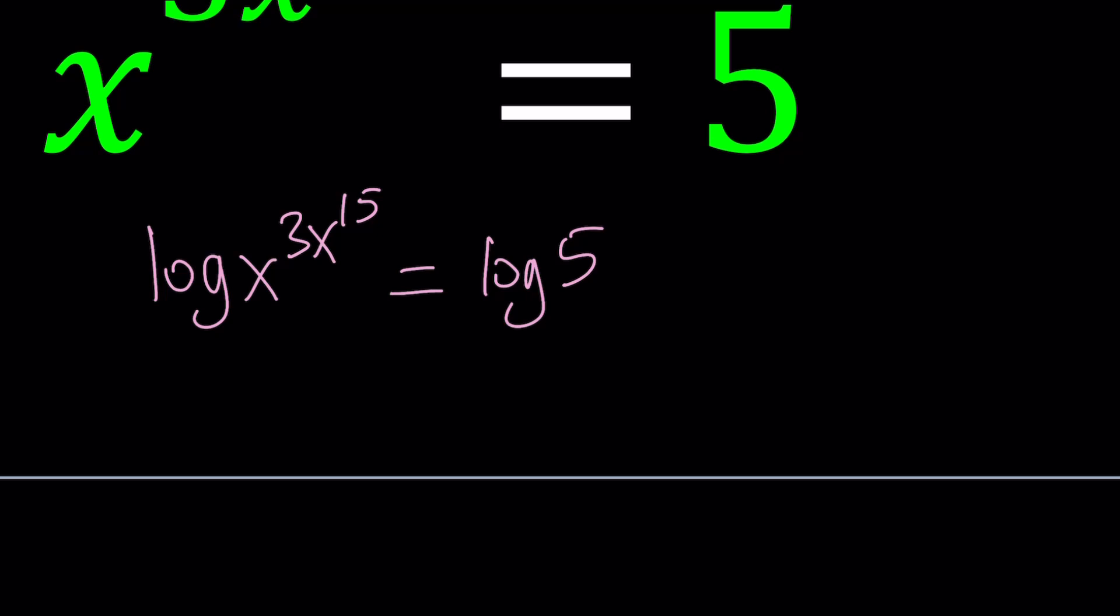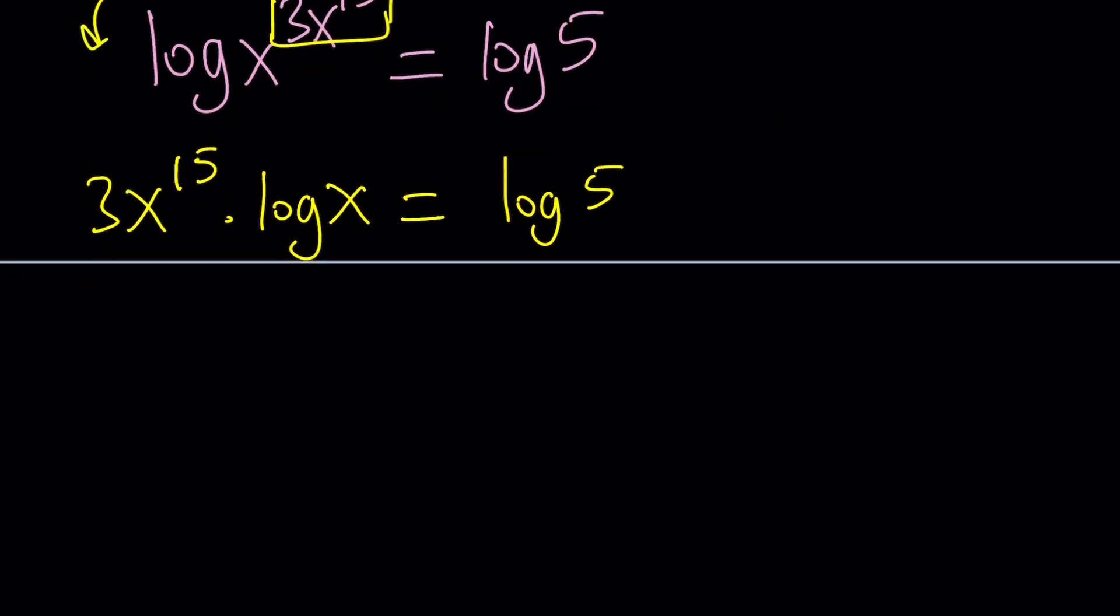So now we can go ahead and move this to the front. That'll be 3x to the power 15 multiplied by log x equals log 5. Now at this point it's kind of tempting to leave the x's on one side and put everything else on the other side. But this kind of gives us x to the power 15 times log x and if we put the 3 on the other side, so weird x by the way, we're just going to divide by 3 so it's going to be like a fraction. So it's going to look like this.